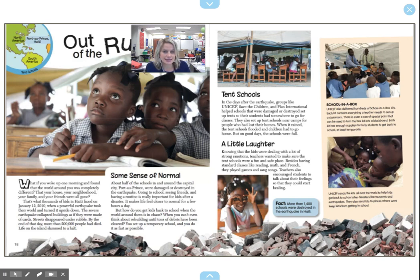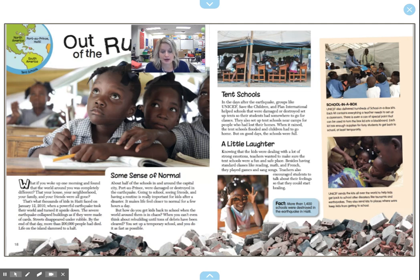So what were some of the things that they gave to the schools? The box had things they could use to set up their classroom. It even had special paint to turn the box lid into a blackboard, and there was enough supplies for 40 students — things they would need to help them learn, like paper and pencil and things like that.